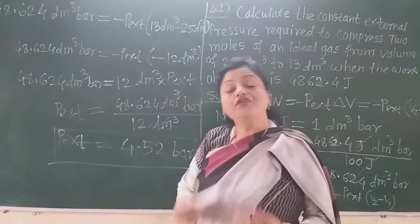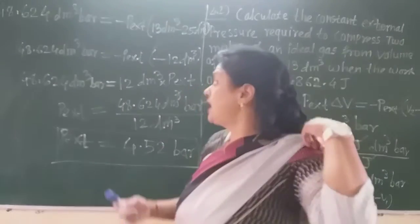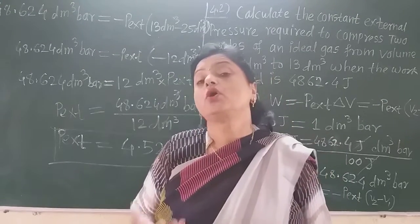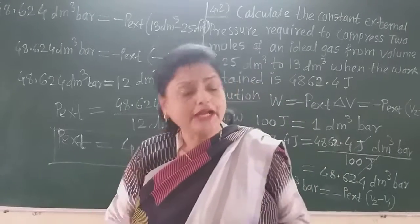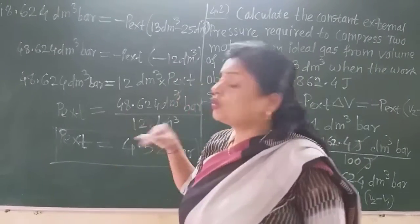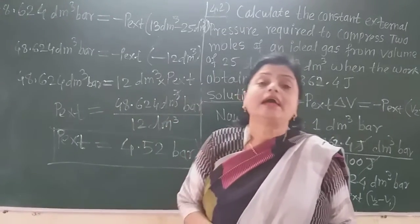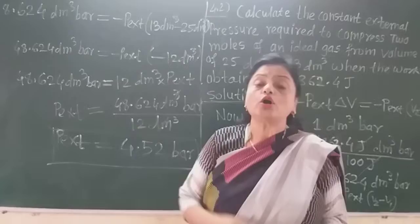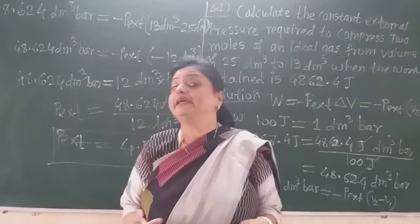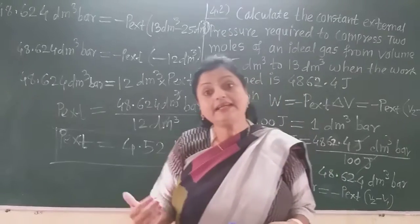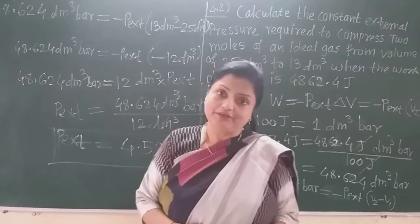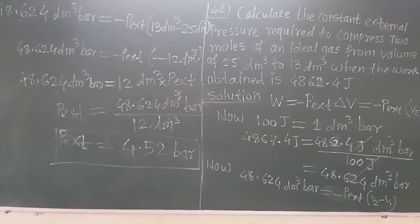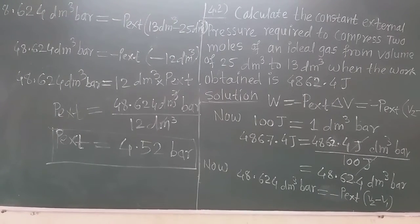In this lecture, we solved numericals based on the formula W equals minus P_external into delta V. There are always numericals on this topic in JEE and CET exams, so try to solve the maximum number of problems. Problem 4.3 is also given — please solve that on your own, and we will see the next topic in the next video. Please like, subscribe, and share this video with other Class 12 Science students so they can also benefit in their board examinations, JEE, and CET. Thank you for watching.